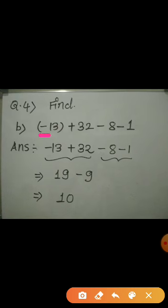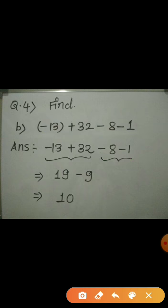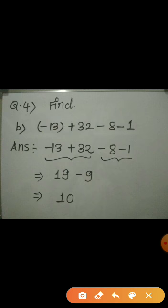Coming to the second example: minus 13, plus 32, minus 8, minus 1. First, open the brackets to get minus 13, plus 32, minus 8, minus 1. We have 4 integers, so we add them in groups. For the first two — one positive and one negative — we subtract: 32 minus 13 equals 19, positive because the bigger integer is positive. For the last two — both negative — we add: minus 8 plus minus 1 equals minus 9. Then 19 minus 9 equals 10. Hence the answer is 10.